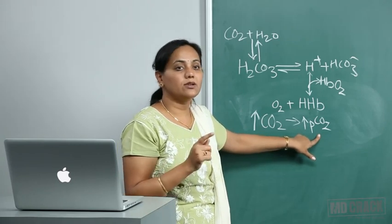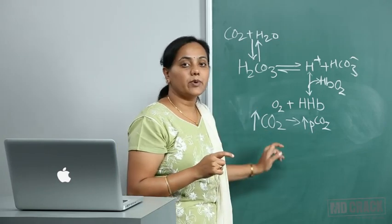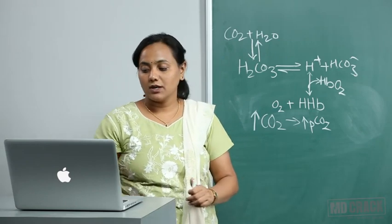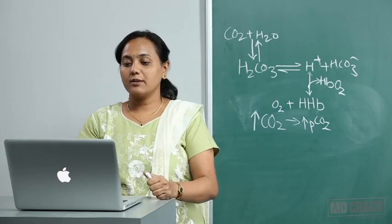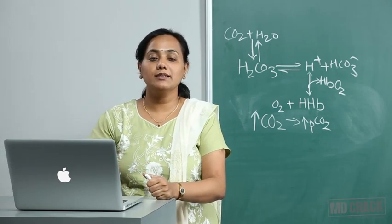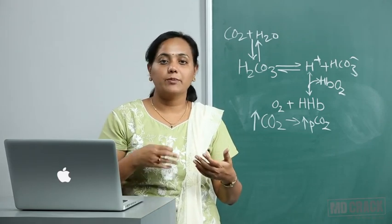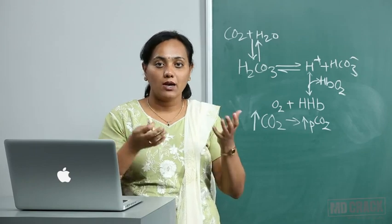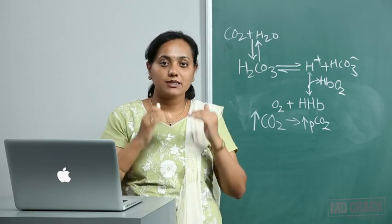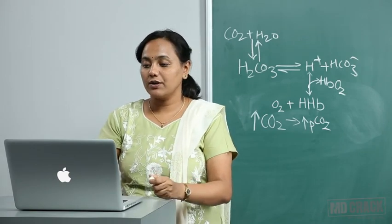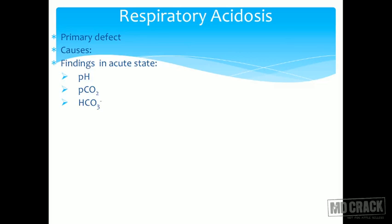When carbon dioxide gets retained, the pCO2 increases, and this is the main thing causing acidosis. The primary defect is increased pCO2 — from the normal of 40, it may go up to 60 or 80. The findings in the acute state: pH will be decreased, pCO2 will be increased, and bicarbonate may be nearly normal.